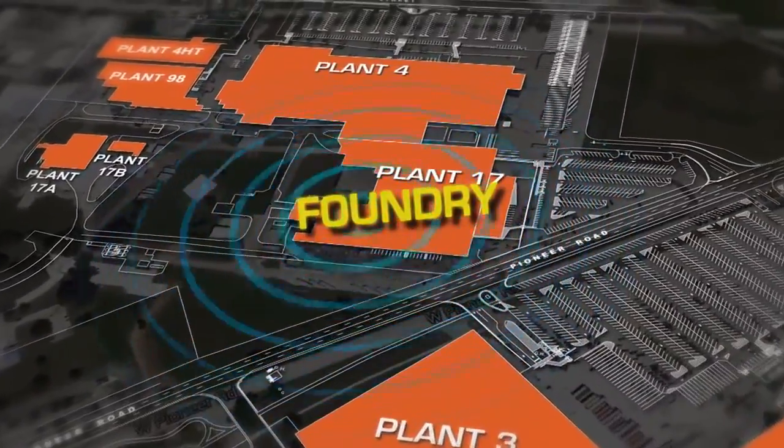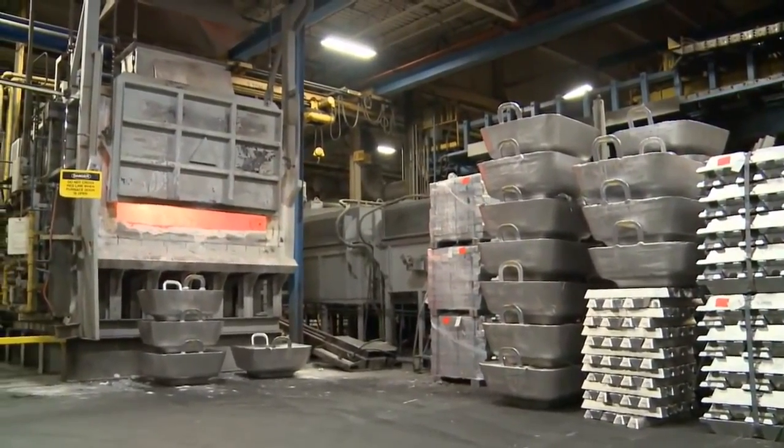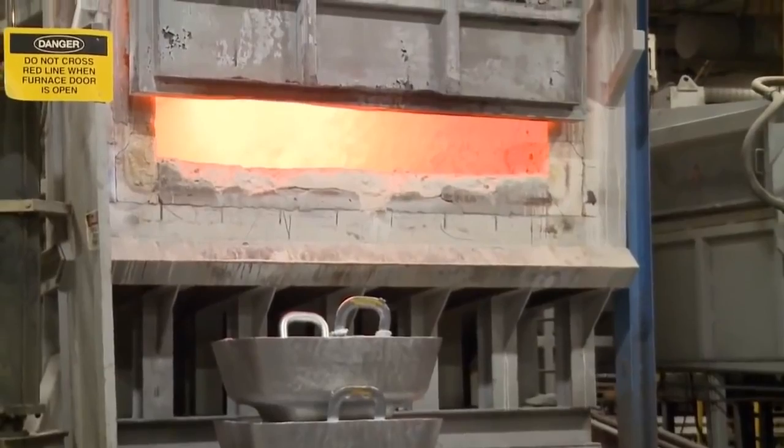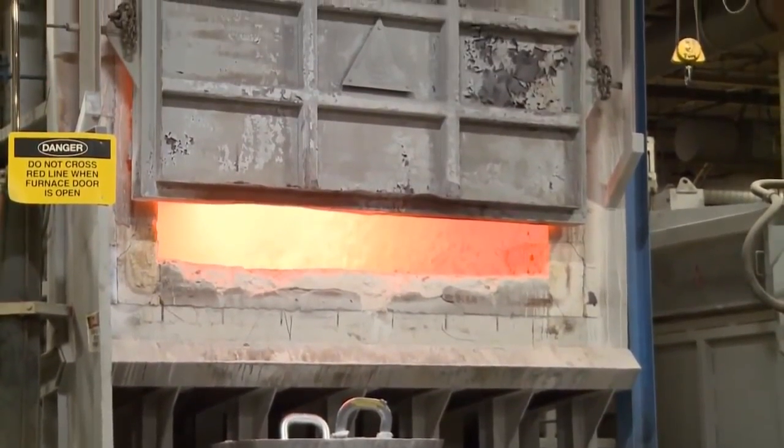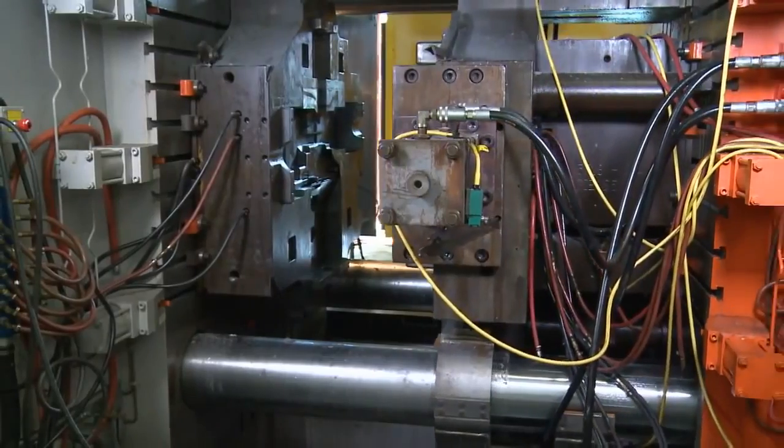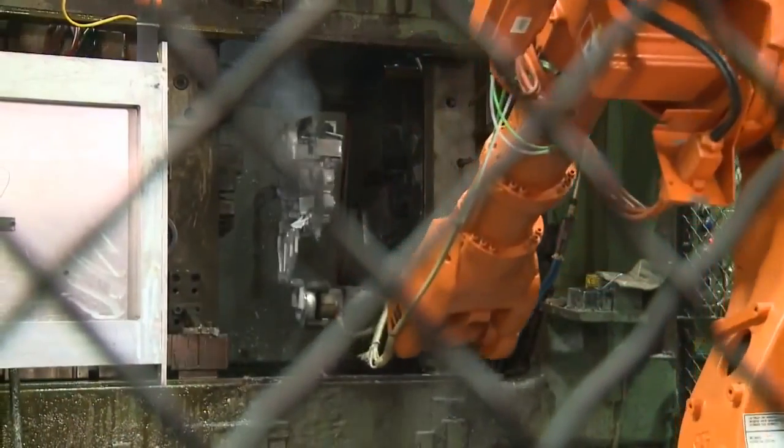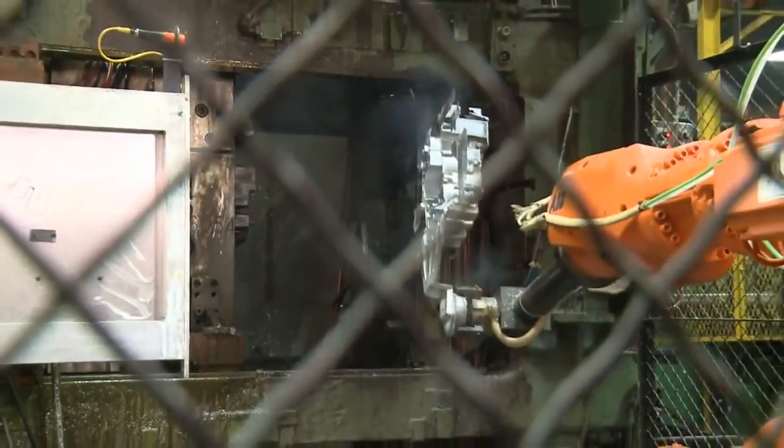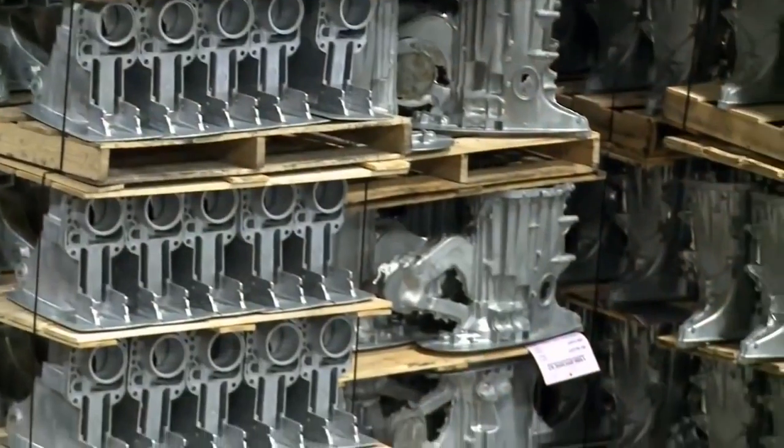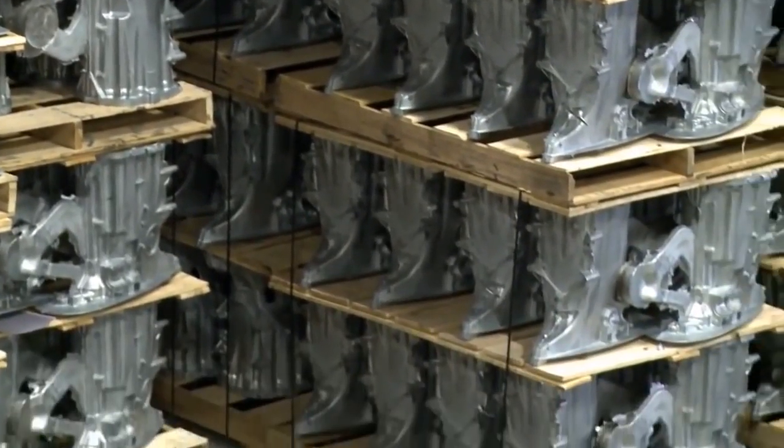The core of every Mercury engine starts here at Mercury's state-of-the-art foundry. This is where Mercury produces its exclusive, low-copper, highly corrosion-resistant aluminum alloy. This unique aluminum alloy is used to cast thousands of different parts that become essential elements of your reliable and durable Mercury engine. Up to 80% of a Mercury outboard's content is produced and machined right here.